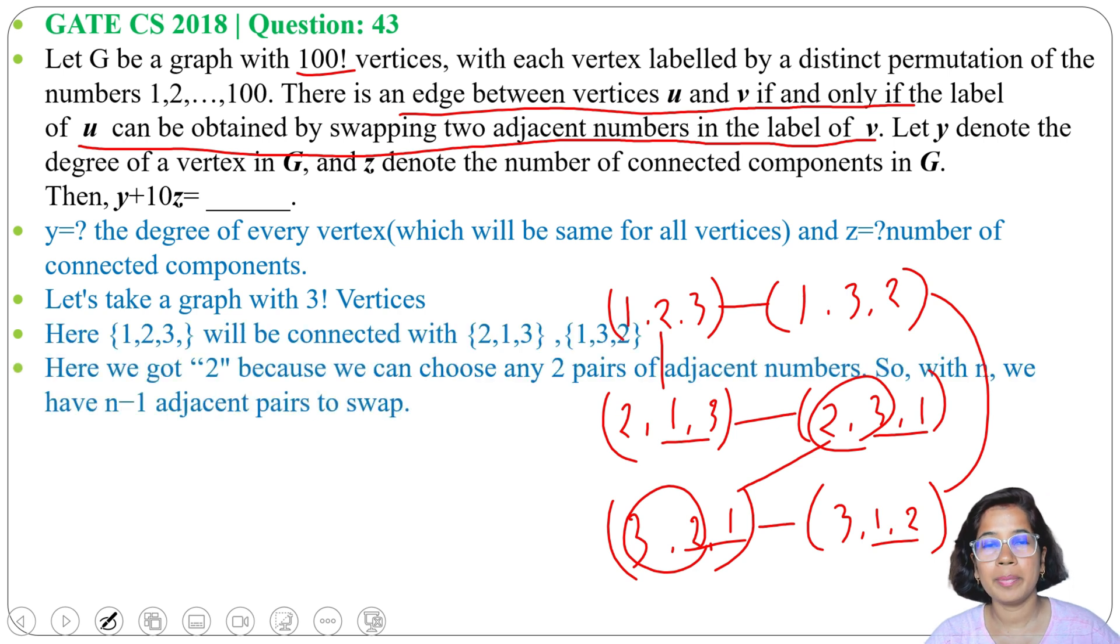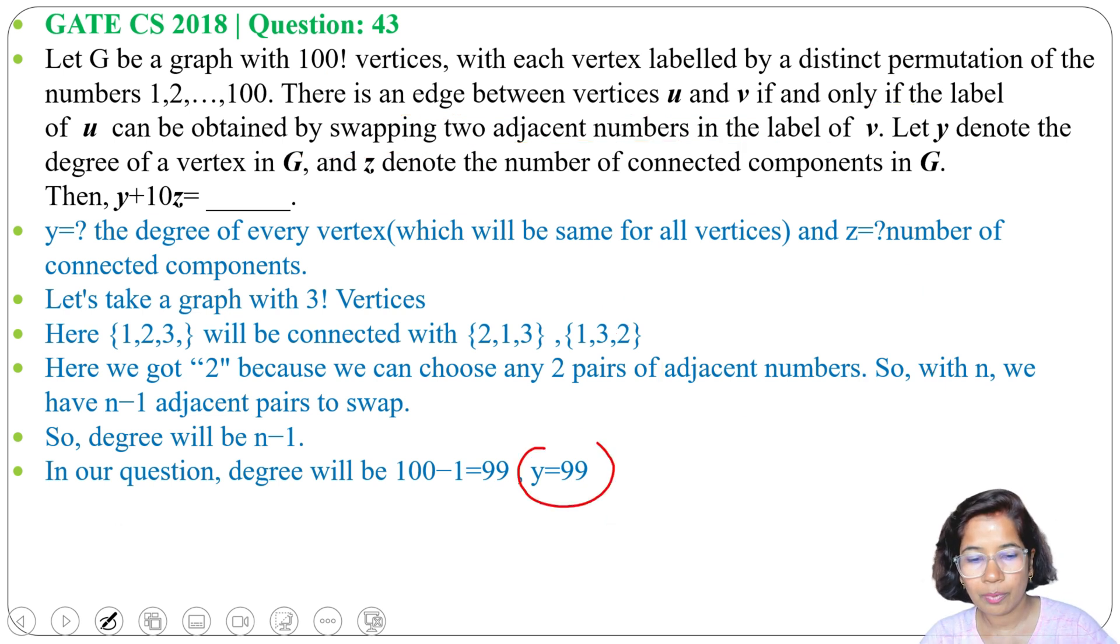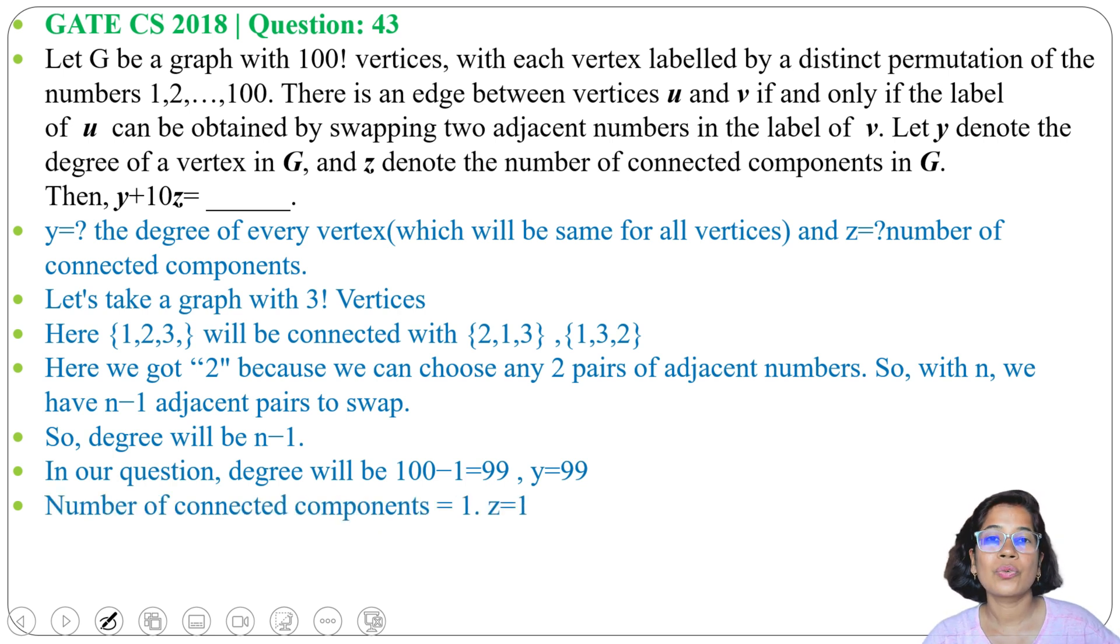So for 100, degree will be 100 minus 1, which is 99. So here we got y as 99. So you understood how we got y equals to 99. As each vertex is connected with other vertices, so there is just one connected component, right? So z equals to 1. We got y equals to 99, z equals to 1. Now just put the value here - in place of y: 99 plus 10 multiplication 1.